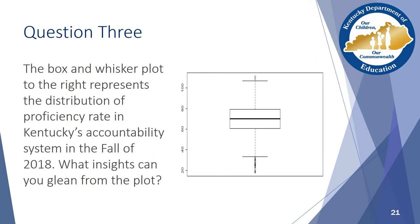The box and whisker plot to the right represents the distribution of proficiency ratings in Kentucky's accountability system in the fall of 2018. What insights can you glean from the box plot? Pause the webinar now and replay when you are ready to hear the discussion.